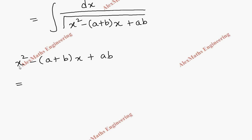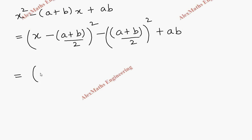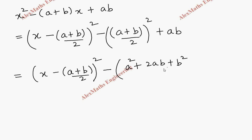We subtract the square of (a+b)/2, giving minus (a+b)²/4, then write the last term plus ab. The first term is (x − (a+b)/2)², then minus (a+b)²/4 + ab. Expanding (a+b)² gives a² + 2ab + b², so the bracket becomes minus(a² + 2ab + b²)/4 plus ab.